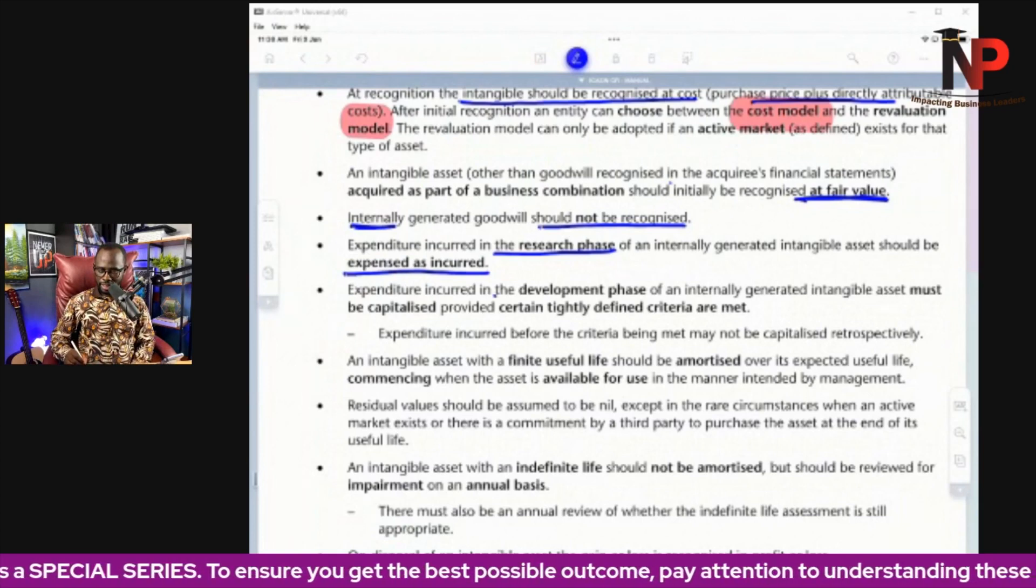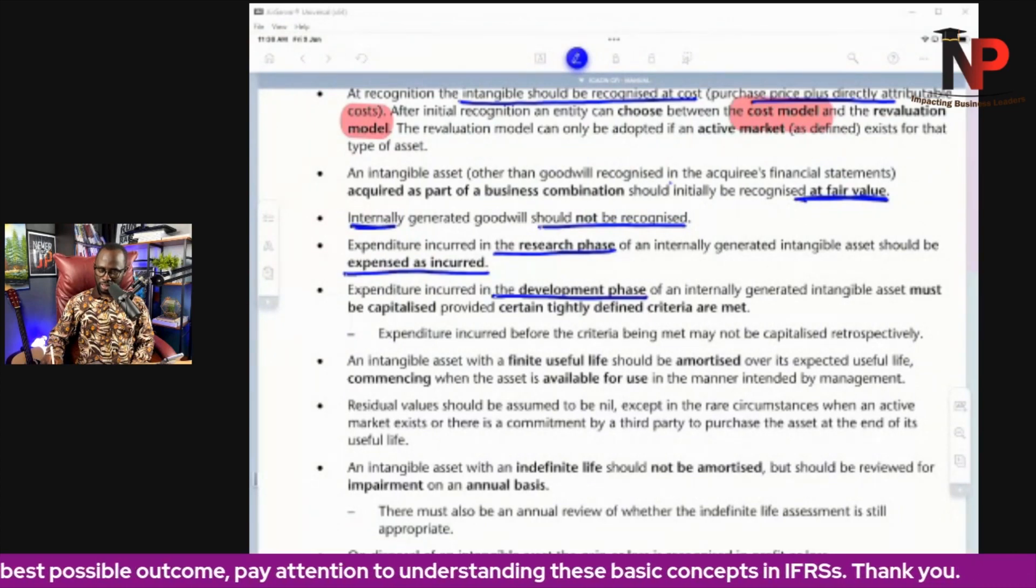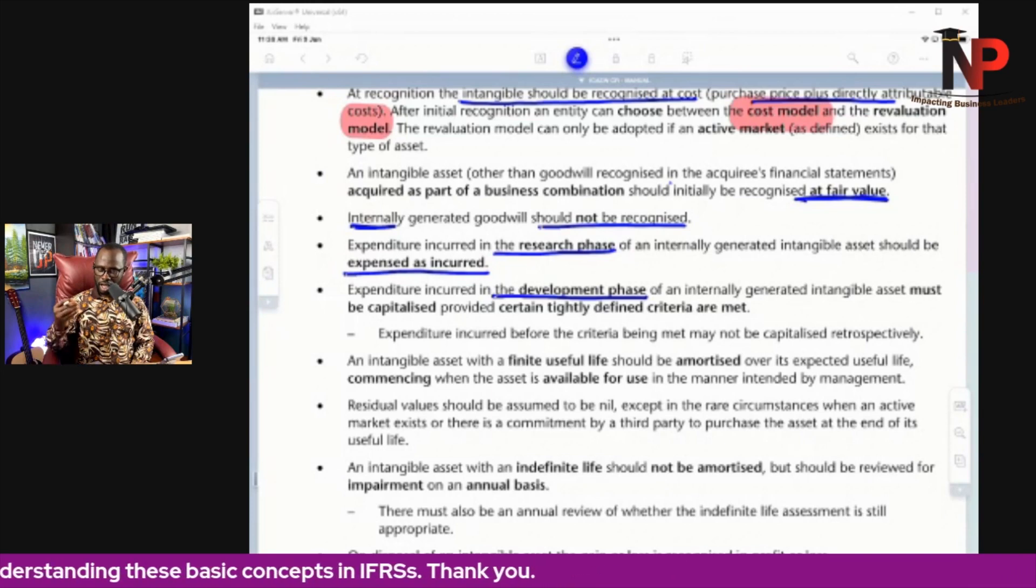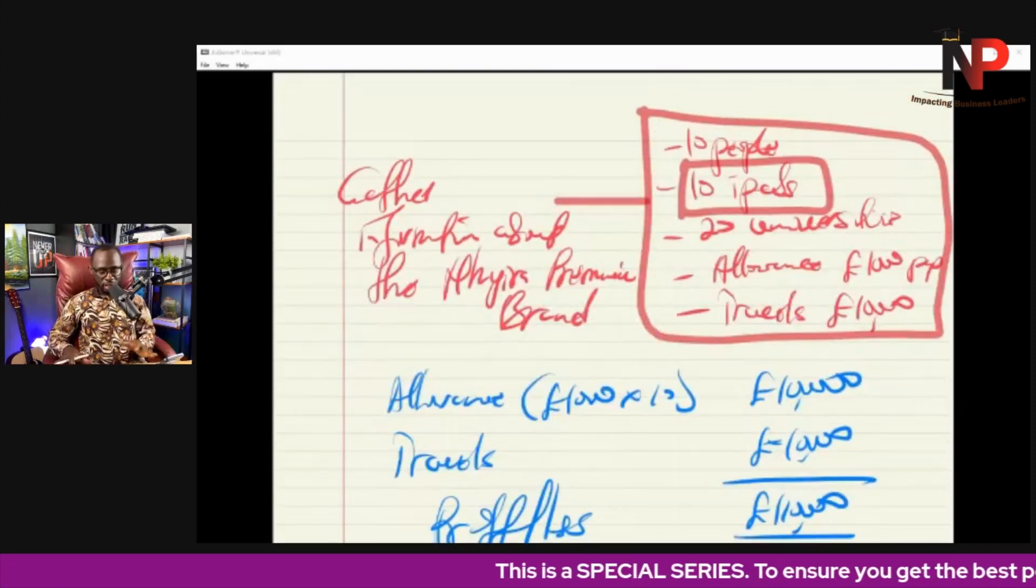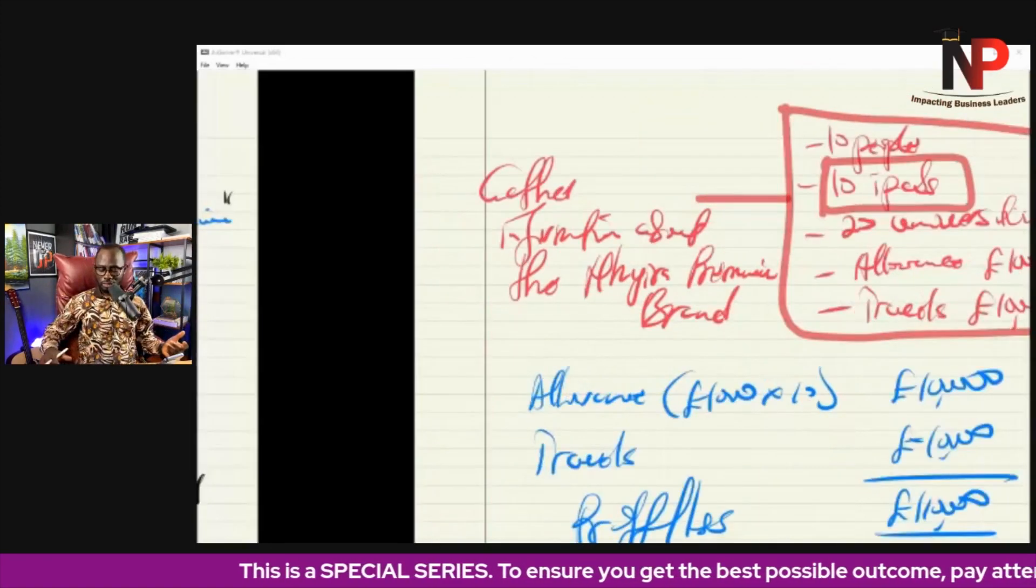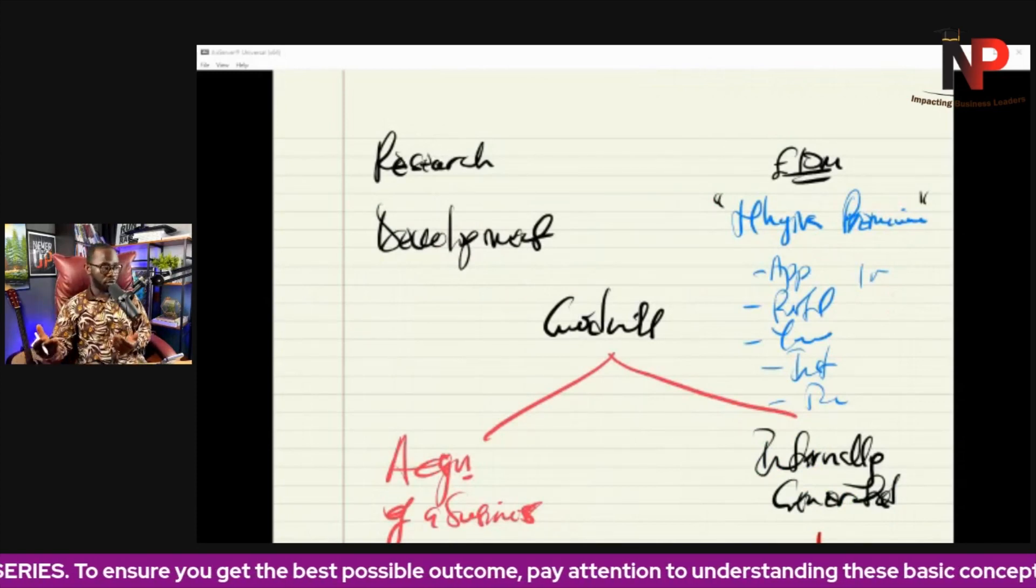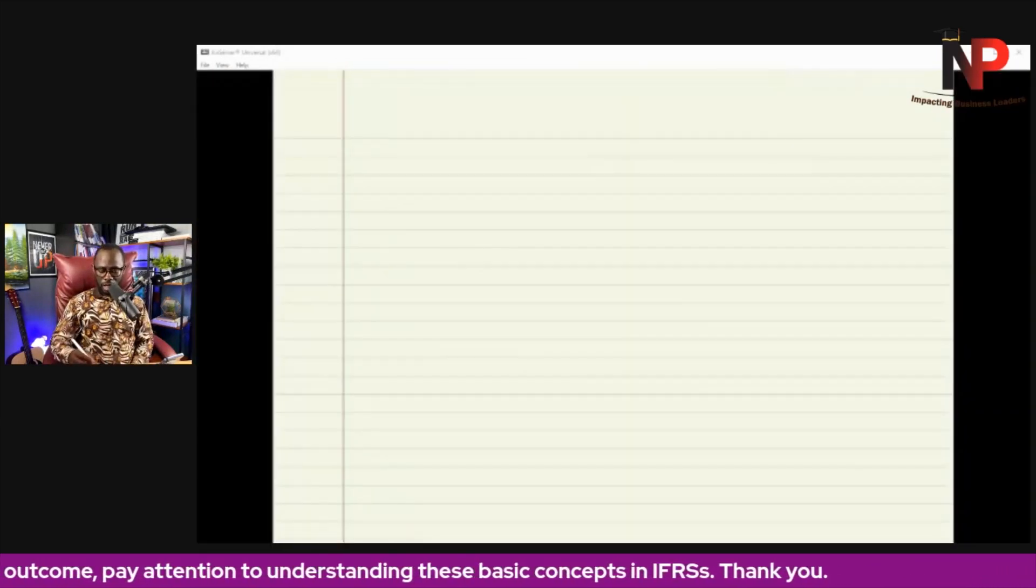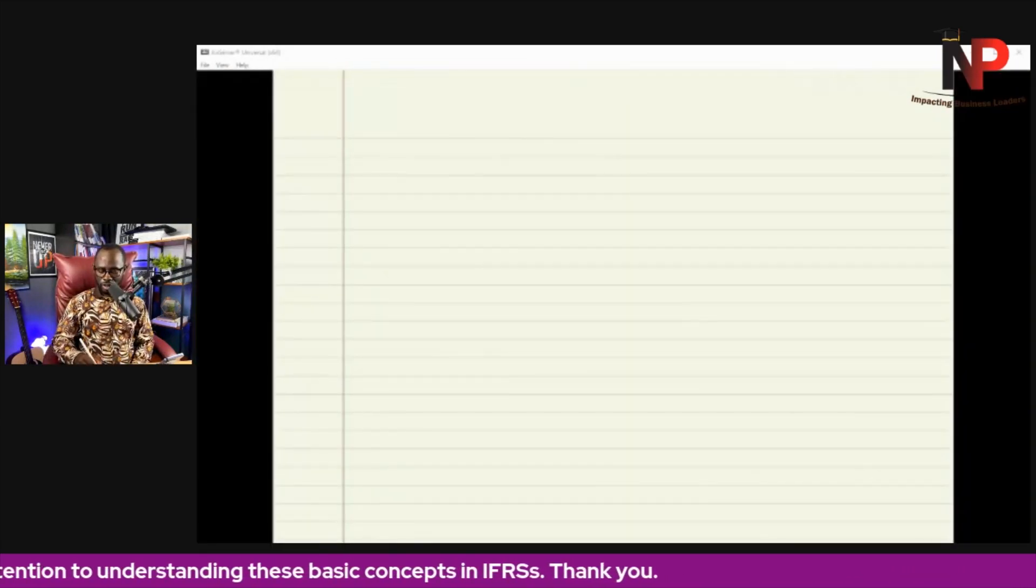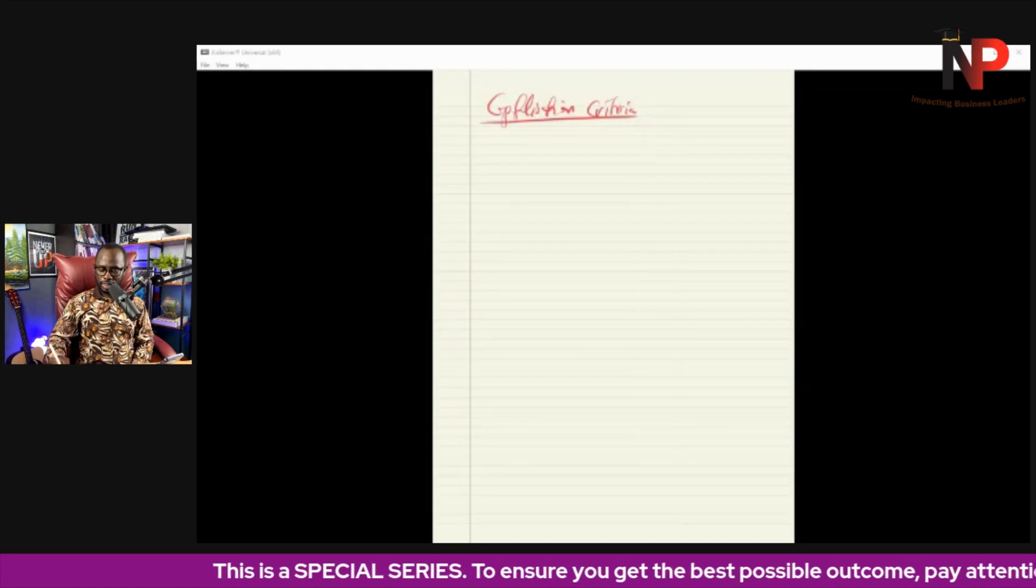Next one. Expenditure incurred in the development phase of an internally generated intangible asset must be capitalized provided certain tightly defined criteria are met. So when we move from the research, they gather the information and bring to us, we will start using the research information to develop a product prototype or improve upon the existing product. That is development. And development costs can only be capitalized when the recognition criteria is met. So capitalization criteria. We call it SECTOR.